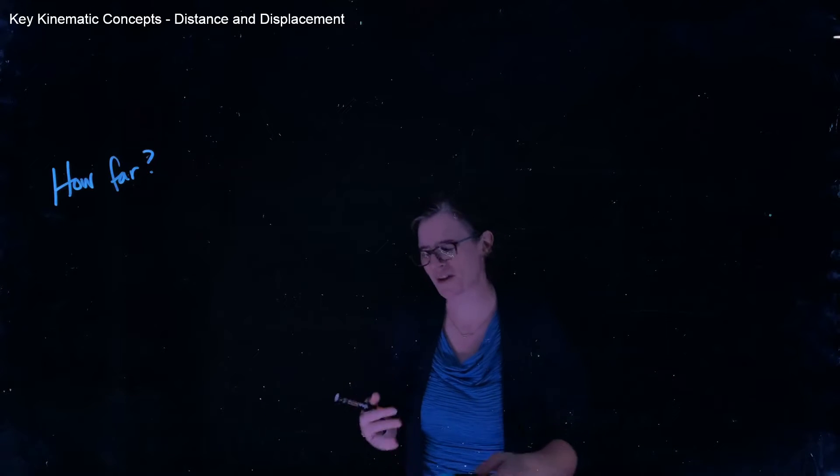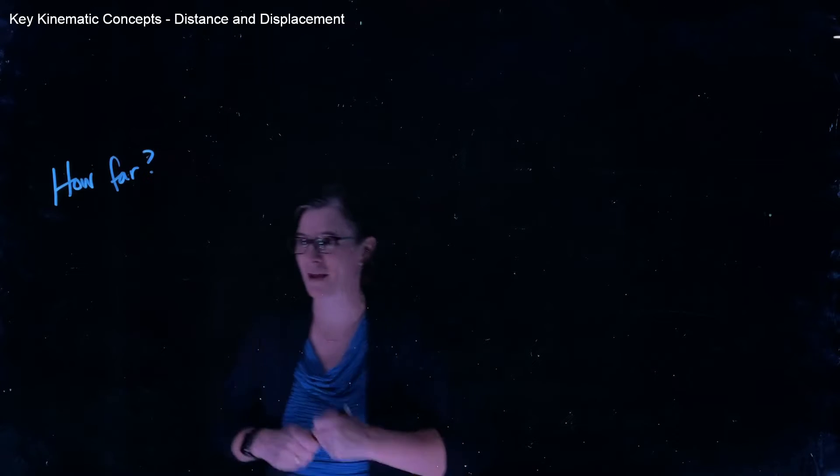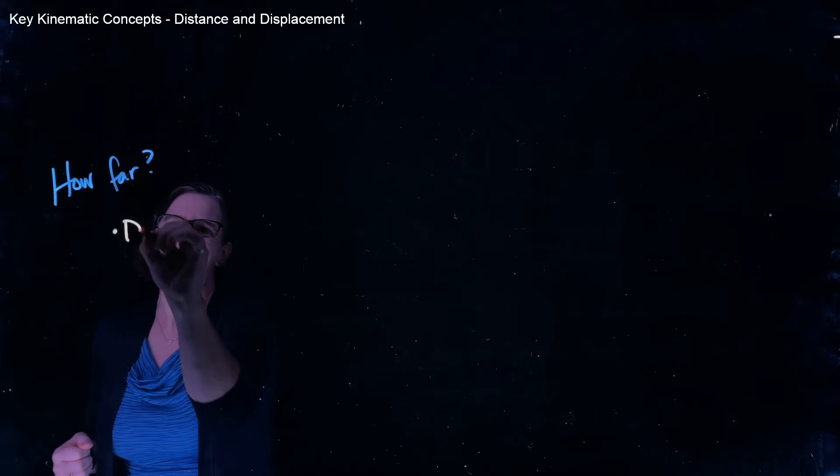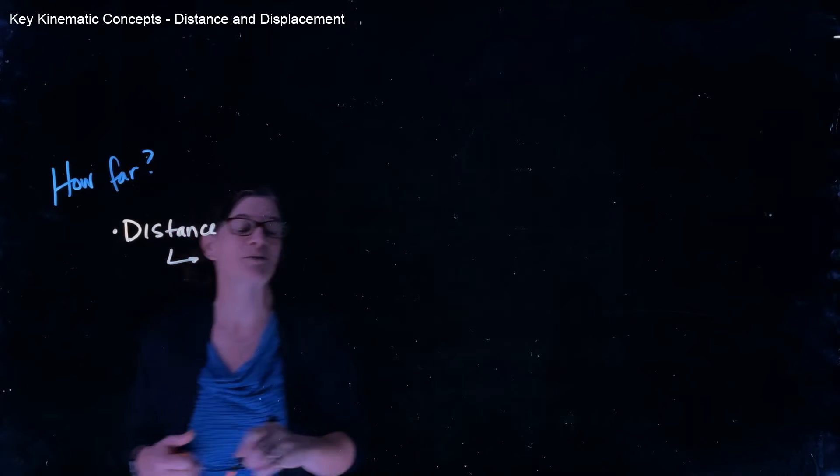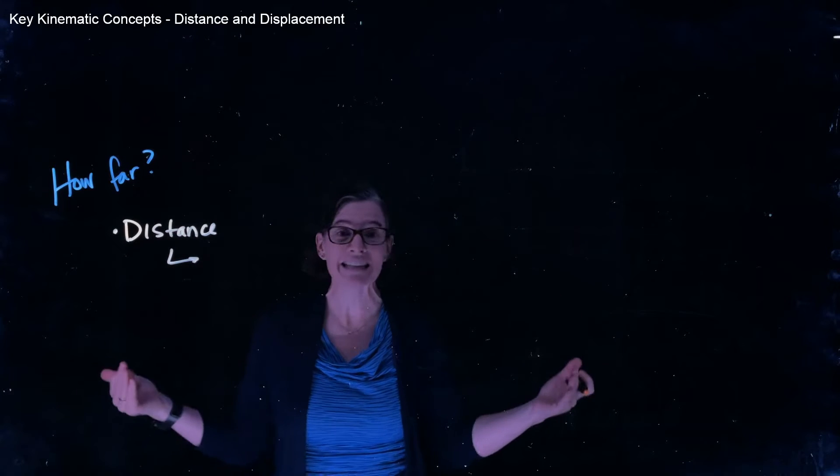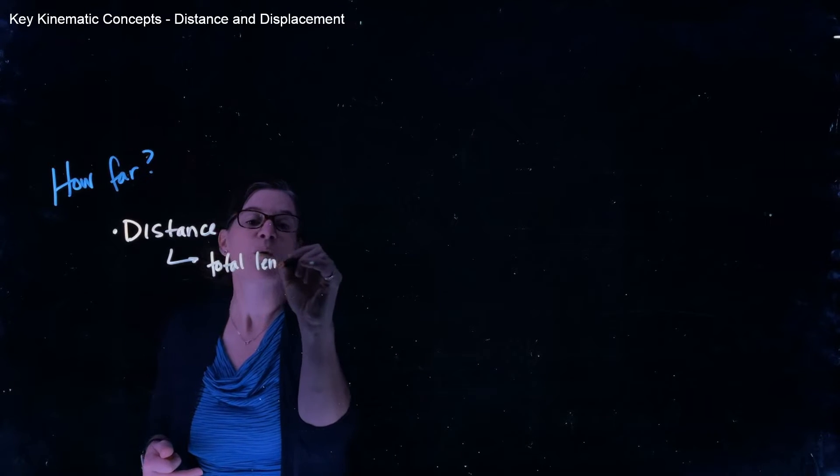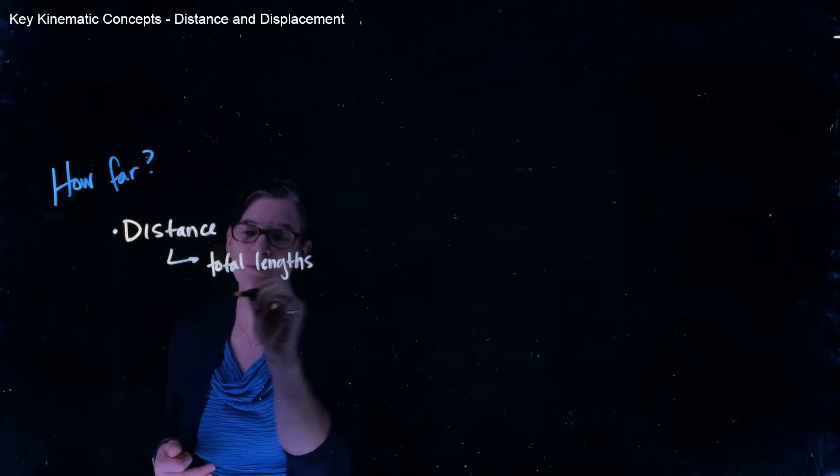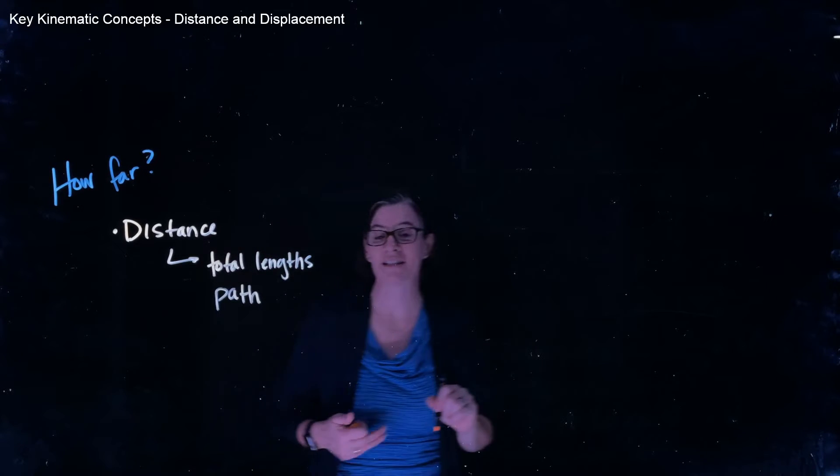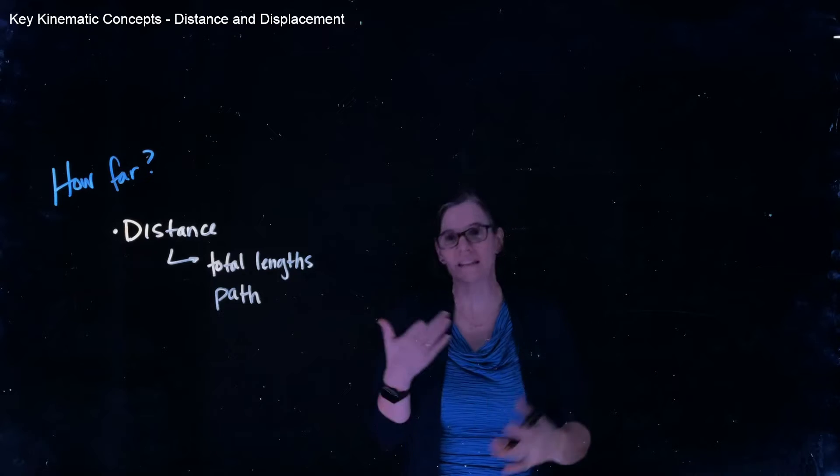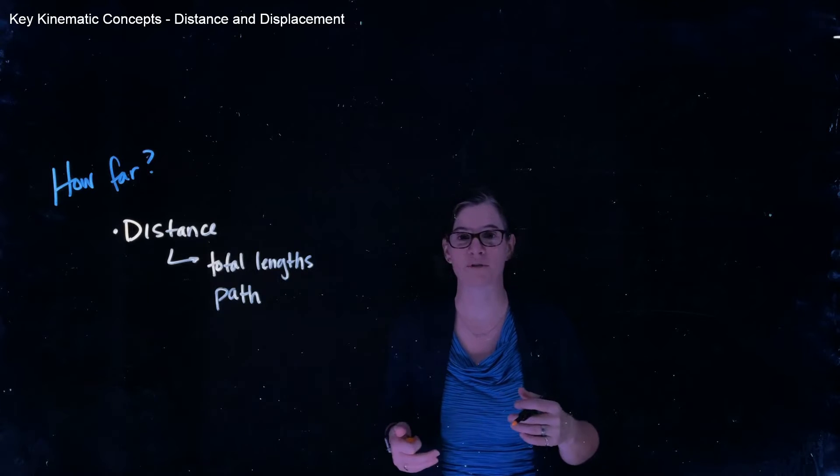So when we answer the question how far about an object's motion, we can do that in two different ways. The first way is what we call the distance. Now the distance is related to the total lengths that that object moves. When we consider distance, we have to consider the path that that object is taking. We add up the lengths along that path to get the total amount of motion of that object.